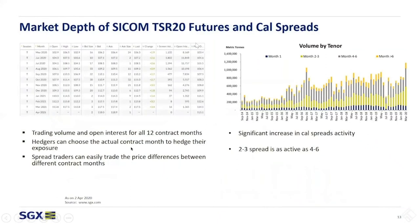On the next slide, you can see the order book with a very tight bid-ask spread of two ticks and over 100 lots of market depth both on the bid and ask side. You can also see the breakdown of liquidity by tenor in front months, months two to three, four to six, and over six months. There's plenty of activity happening in the curve, and the contract could be traded as outright, calendar spreads, or spread-related strategies.